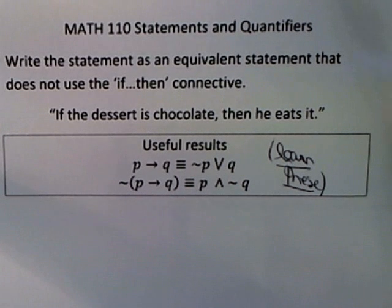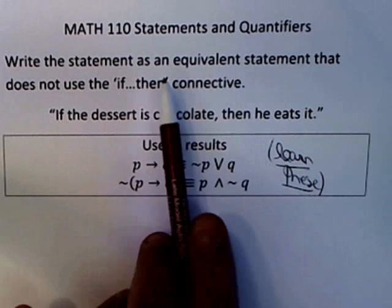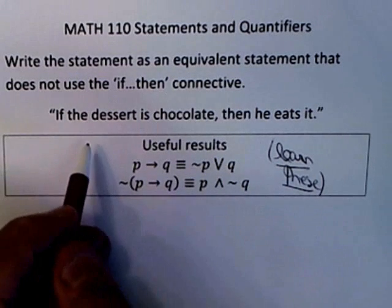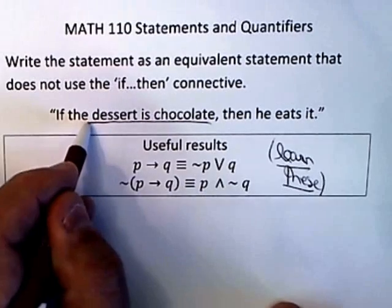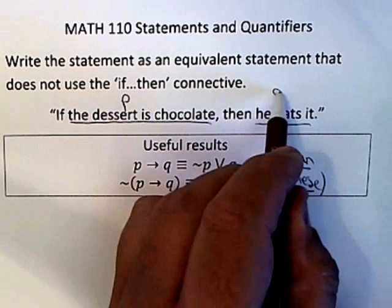If the dessert is chocolate, then he eats it. Write that as an equivalent statement without that if-then connective. The trick is to think of which is which. This is p, the dessert is chocolate. This is q, he eats it.